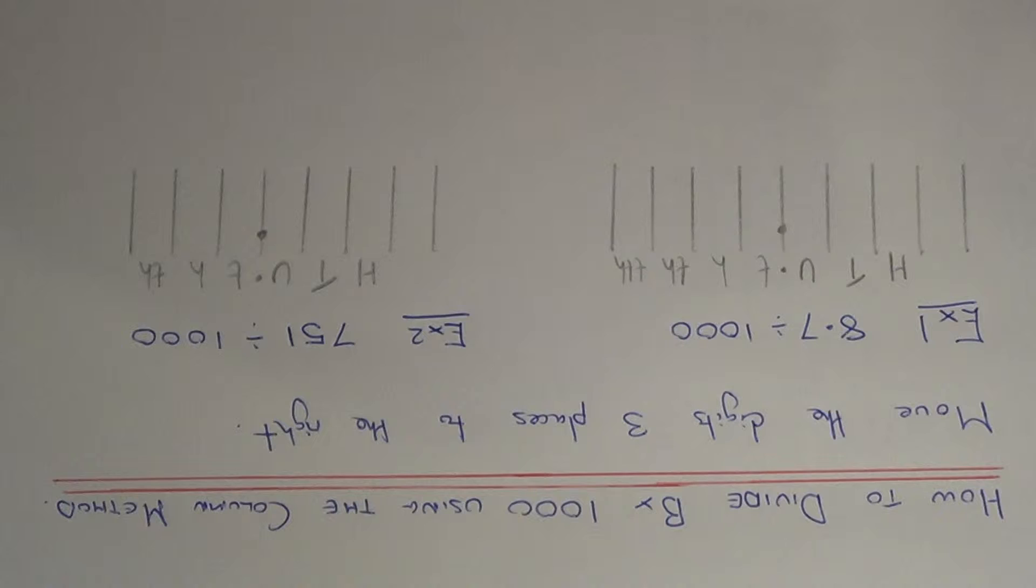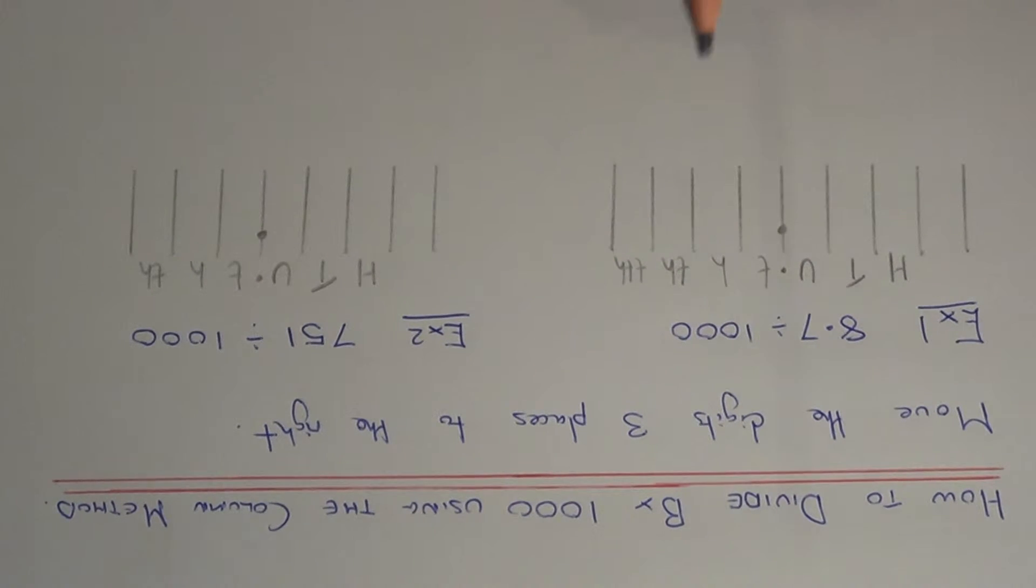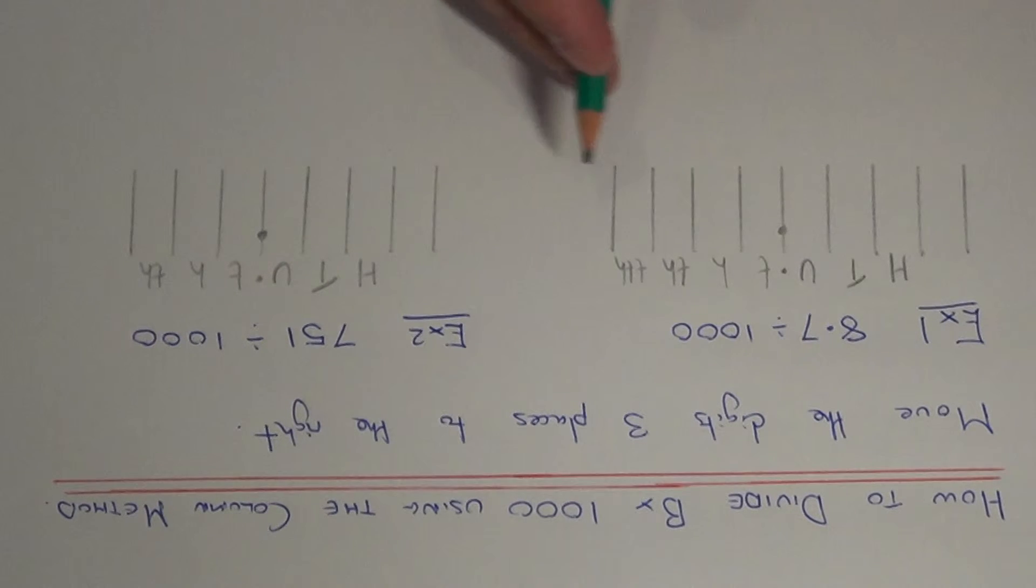All you have to do is write the number that you're dividing by a thousand into the correct columns and you need to move all the digits three places to the right. And remember that the decimal point doesn't move, that stays in the same place. So let's have a look at example 1 then.